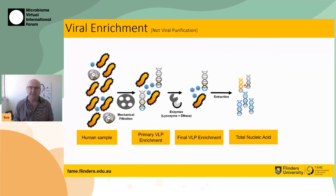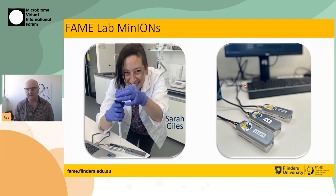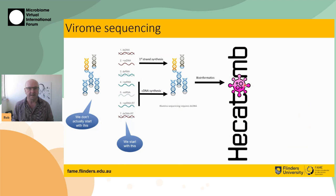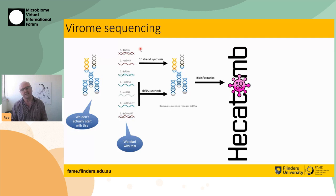In our lab we do quite a lot of MinION sequencing, and we like the MinIONs especially for sequencing phage and viral metagenomes. But it's also important to remember that not all phages, not all viruses, are double-stranded DNA. So we start with a mixture of things. If we're interested in exploring RNA viruses, we've got to do a cDNA synthesis. If we're interested in single-stranded DNA viruses, we've got to do a second-strand synthesis, because DNA sequencing works best if you've got double-stranded DNA.